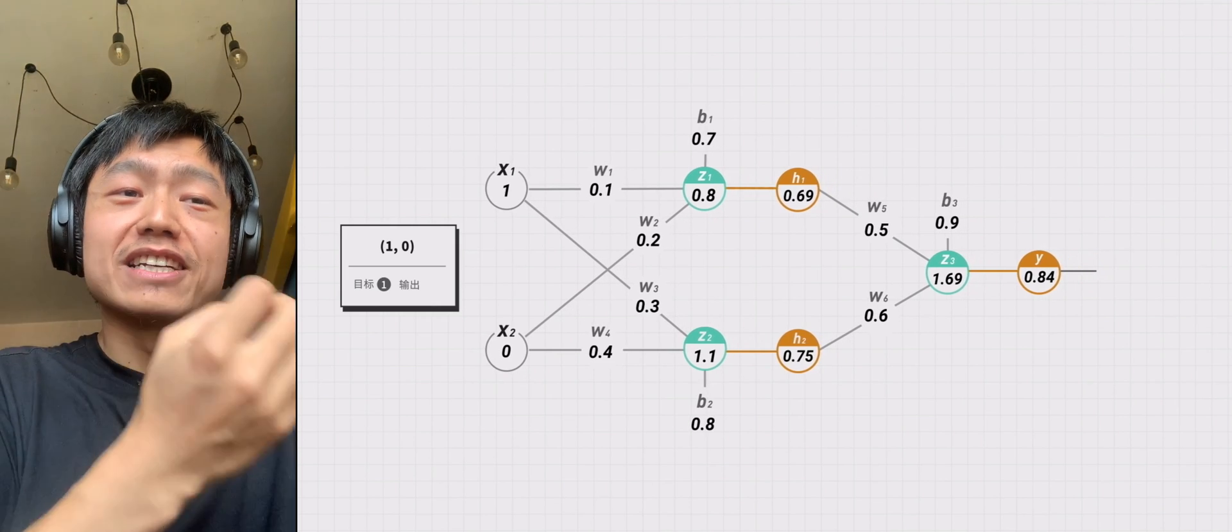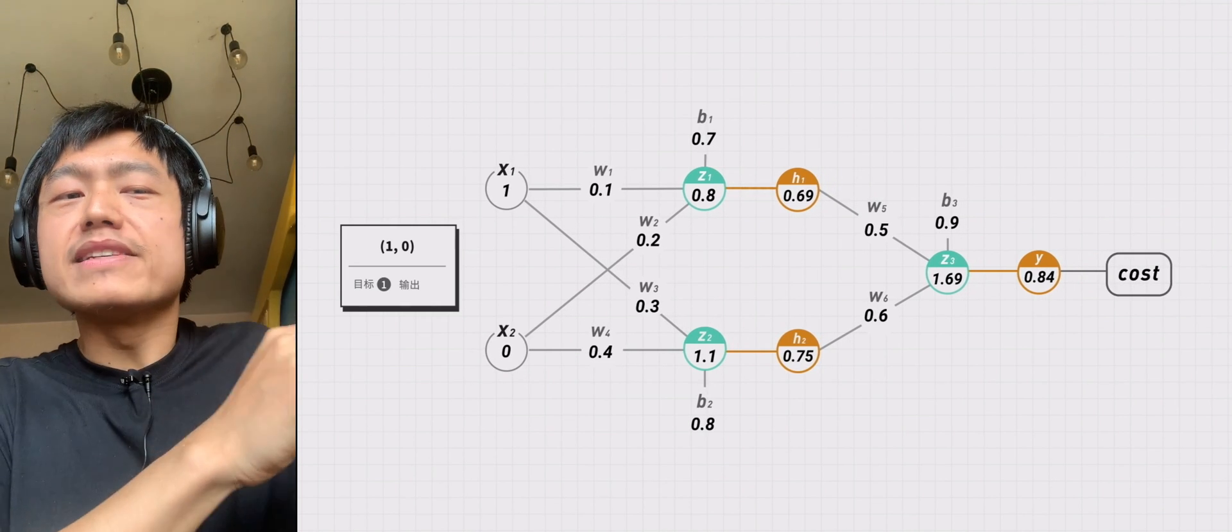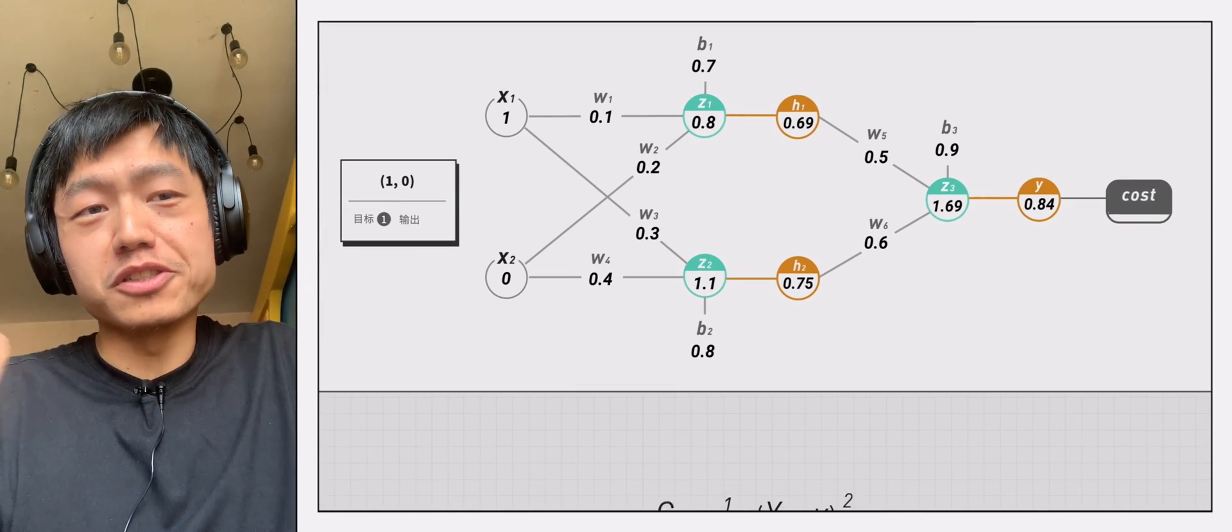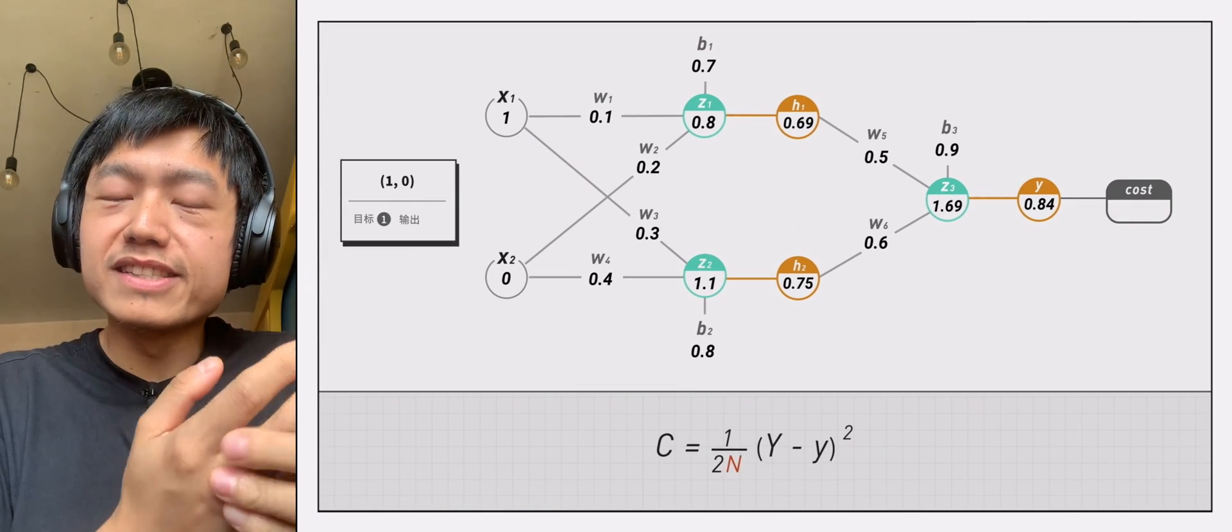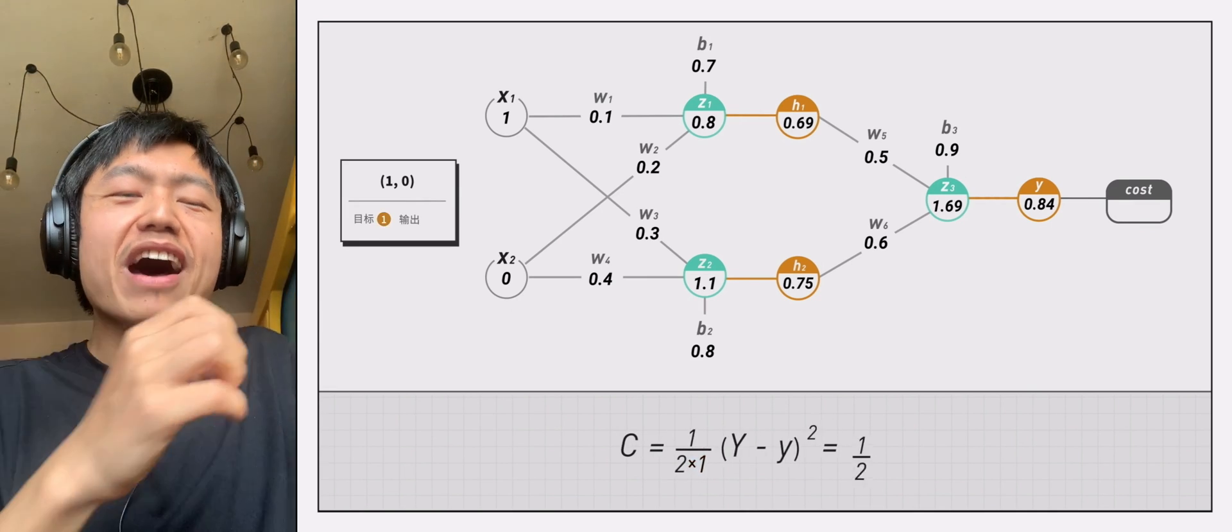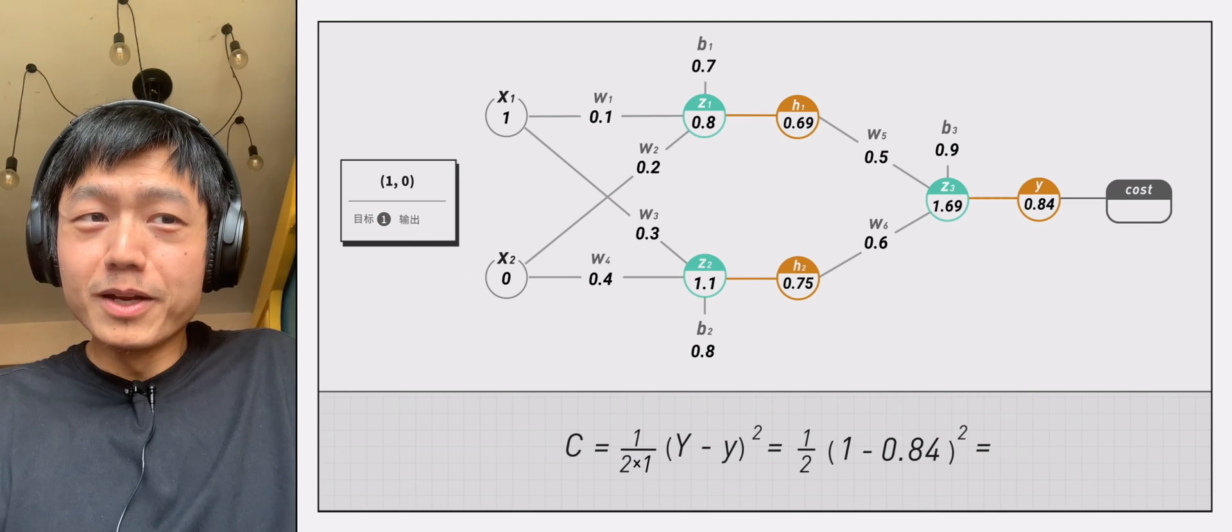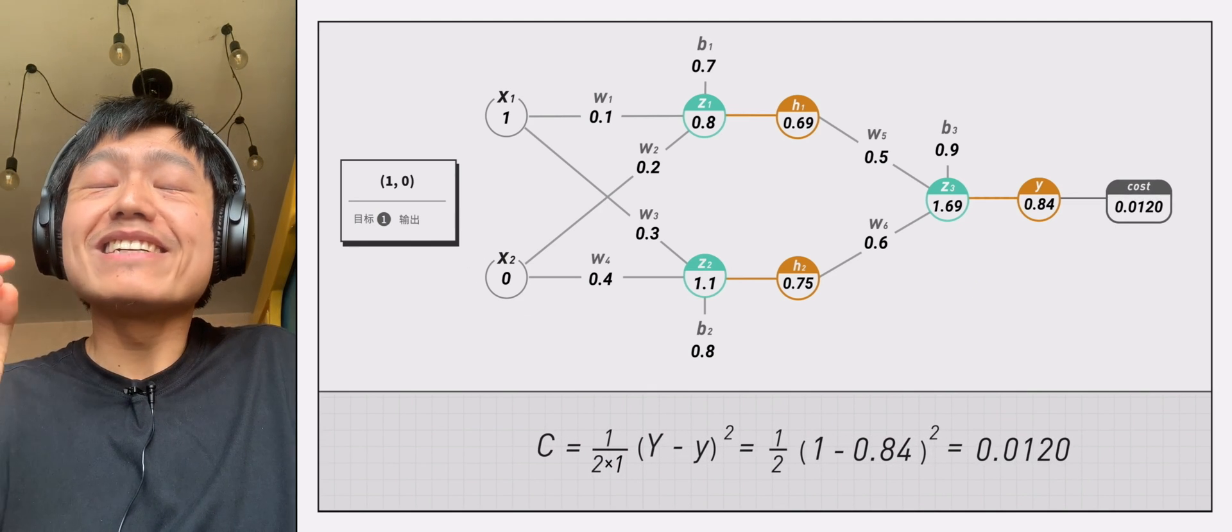We can further calculate the loss c. What we use here is the mean square error loss function. In the case of entering one point, c is like this, but when we bring in the values of uppercase Y and lowercase y, we get 0.0120.